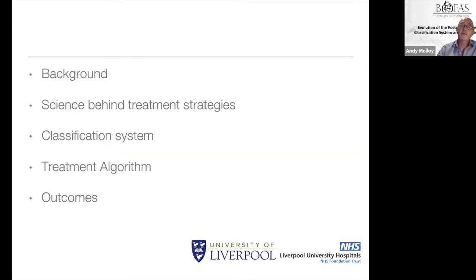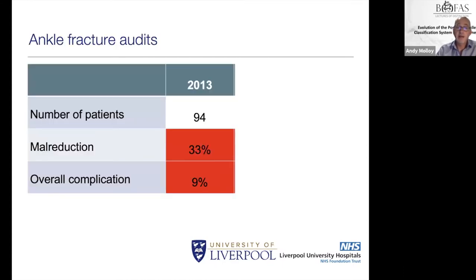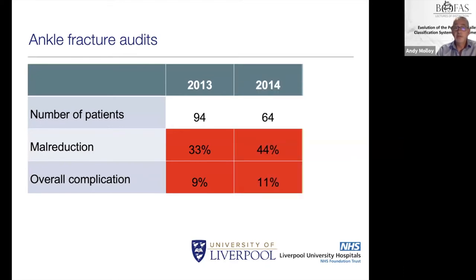Starting with background: back in 2011 we were having to revise quite a few ankle fractures, so we did a prospective audit. Disappointingly, we found a 33% malreduction rate with an overall complication rate of 9%. We then went through a period of re-education using audit and induction. When we re-audited prospectively, the malreduction rate had actually deteriorated to 44% with a higher percentage of overall complications.